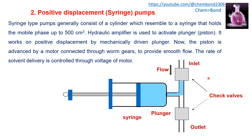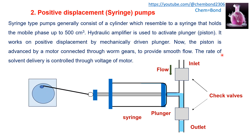In the forward stroke, the mobile phase moves towards the column. The piston is advanced by a motor connected with worm gears that provide a smooth flow. The rate of solvent delivery is controlled by the voltage of the motor — if the voltage is high, solvent delivery is high because the piston moves fast; if the voltage is low, solvent delivery is low because movement is slow.